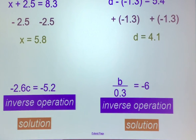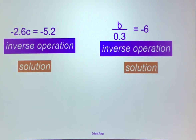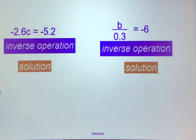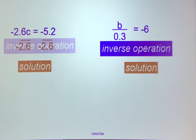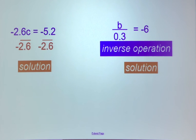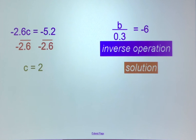Now a multiplication equation with decimals. The variable is not isolated — it's being multiplied by negative 2.6. To undo multiplication we divide, so we divide both sides by negative 2.6. This isolates c, and on the other side a negative divided by a negative is a positive, so c equals 2.